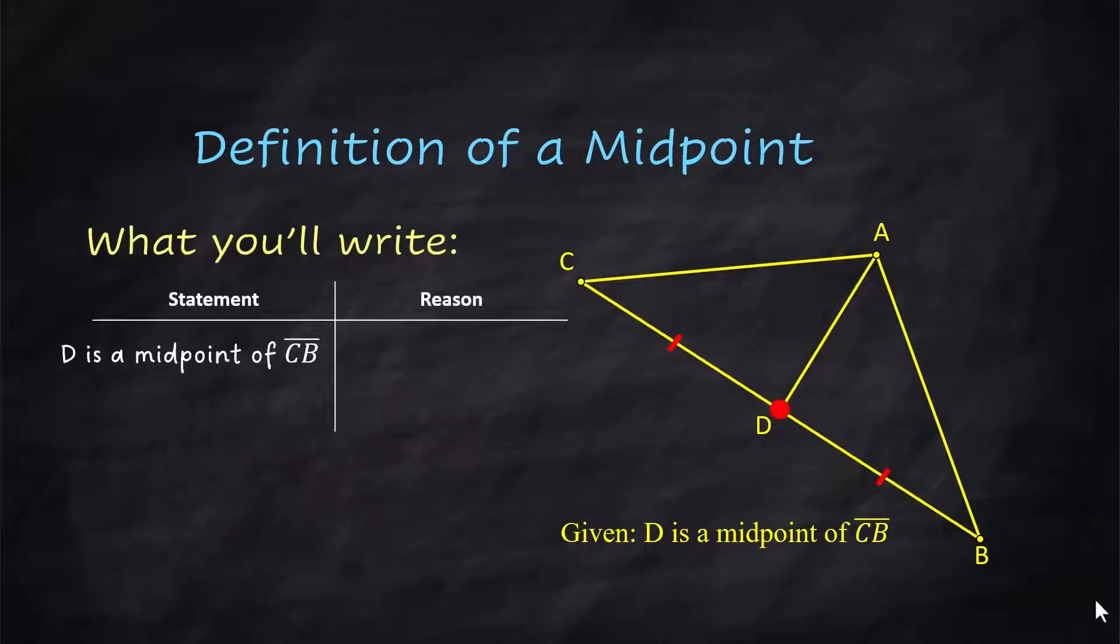D is a midpoint of CB. You have to say that first. That's given. And then segment CD is congruent to segment DB. And that's the definition of a midpoint.